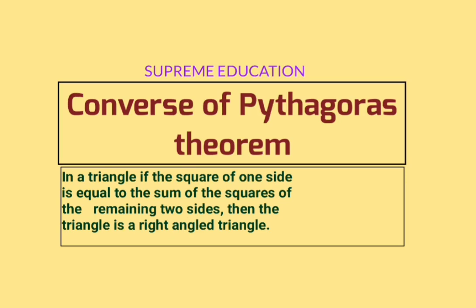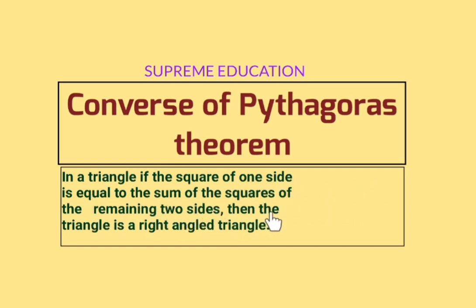The statement of the Converse of Pythagoras theorem is: in a triangle, if the square of one side is equal to the sum of the squares of the remaining two sides, then the triangle is a right angle triangle. Now we have to draw one proper diagram.